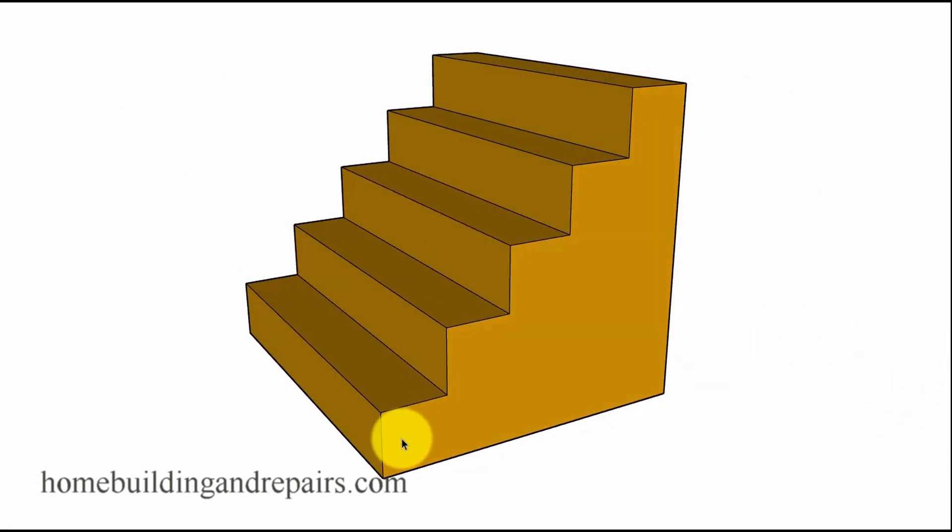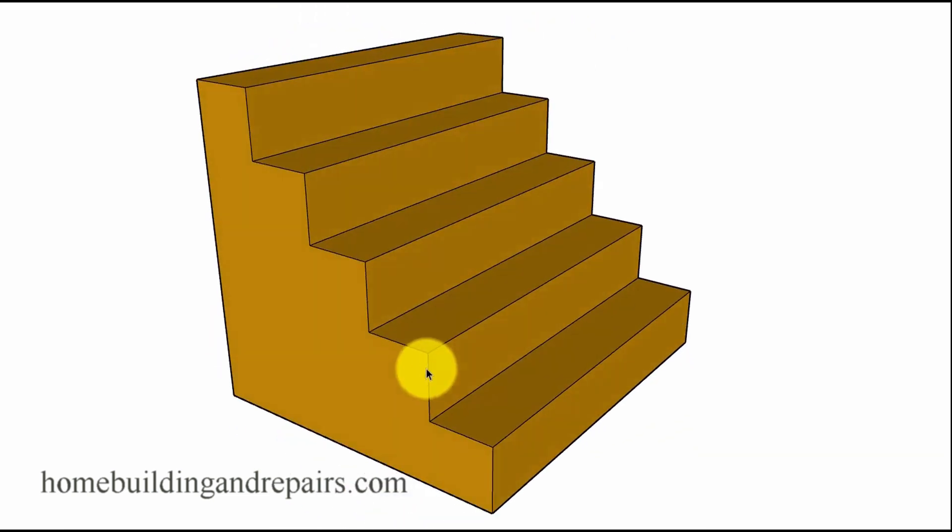Sometimes a picture is worth a thousand words and in this case here's a thousand words. This is kind of what your stairway would look like at a 45 degree angle. The depth of the tread and the height of the riser will be exactly the same. So 45 degree angle won't work.